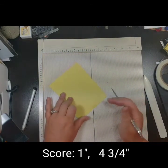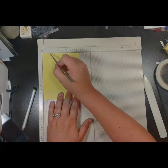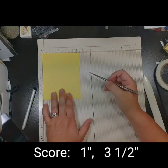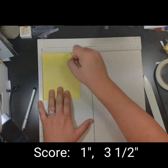Then you'll want to rotate the paper 90 degrees so that the short edge is up and you'll want to score at one inch and three and a half inches.